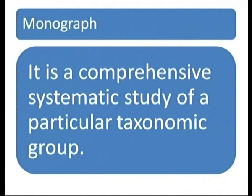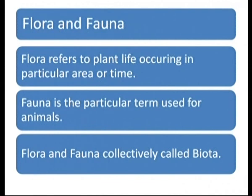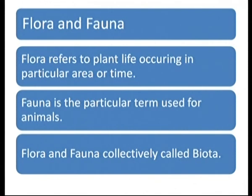A monograph is a comprehensive systematic study of a particular taxonomical group. Flora refers to the plant life occurring in a particular area or time — the type of vegetation in a region across seasons. Fauna is the corresponding term for animals. Together, flora and fauna of a region are collectively called biota.